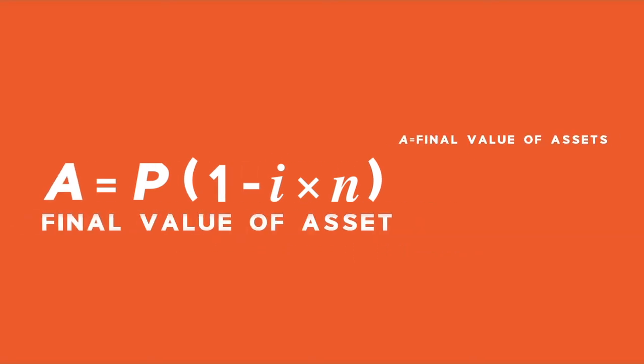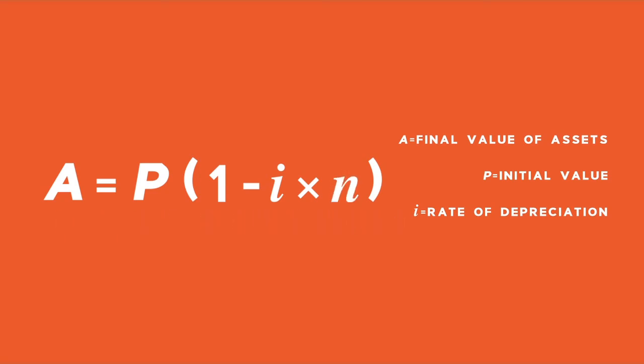A is the final value of your asset. P is the initial or present value. I is the rate of depreciation, and N is your number of years.